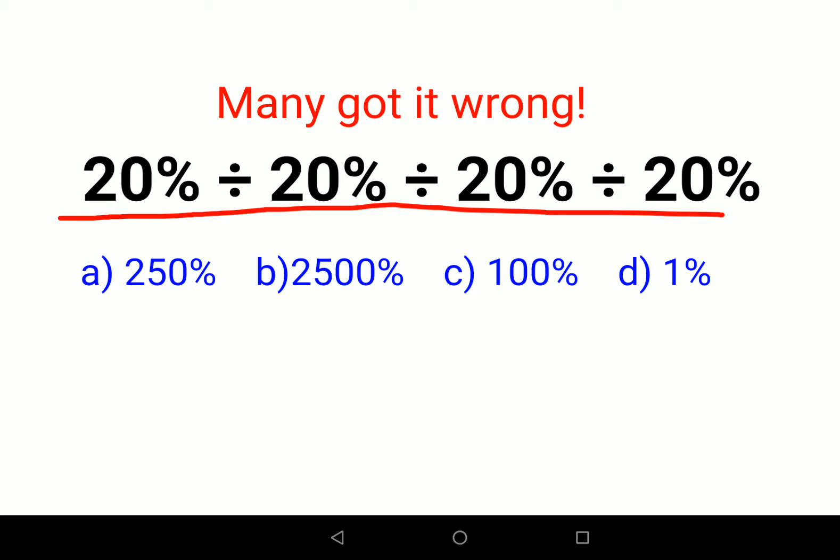All these options are given in terms of percentage, so first let's convert this 20% in terms of a fraction. So 20 upon 100, right? And this division sign will then change to multiplication.